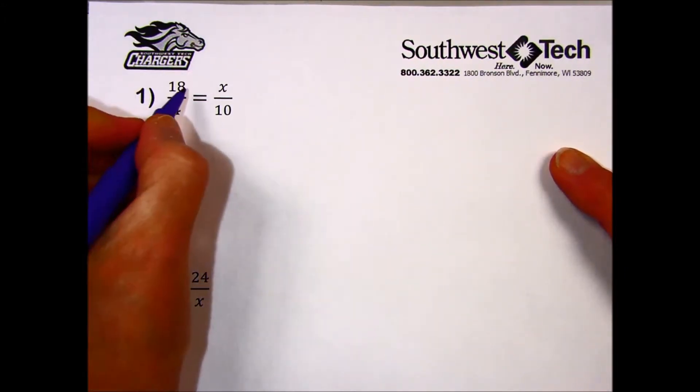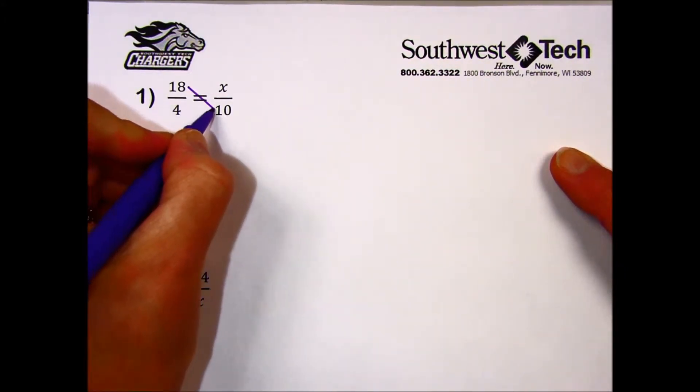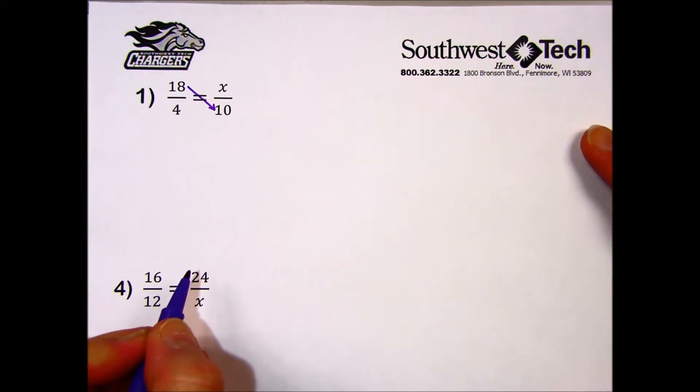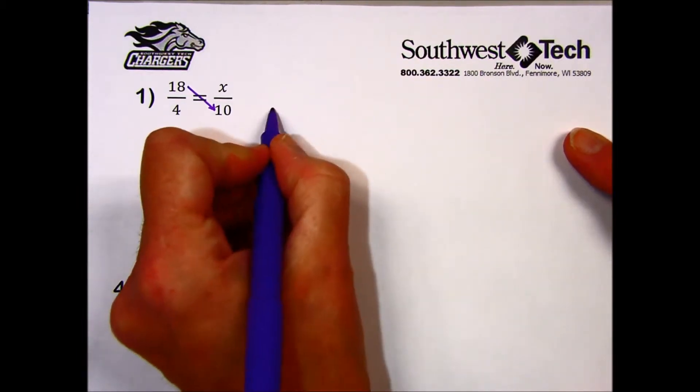When solving using the cross-multiplication technique, we multiply the diagonal that has two numbers in it.